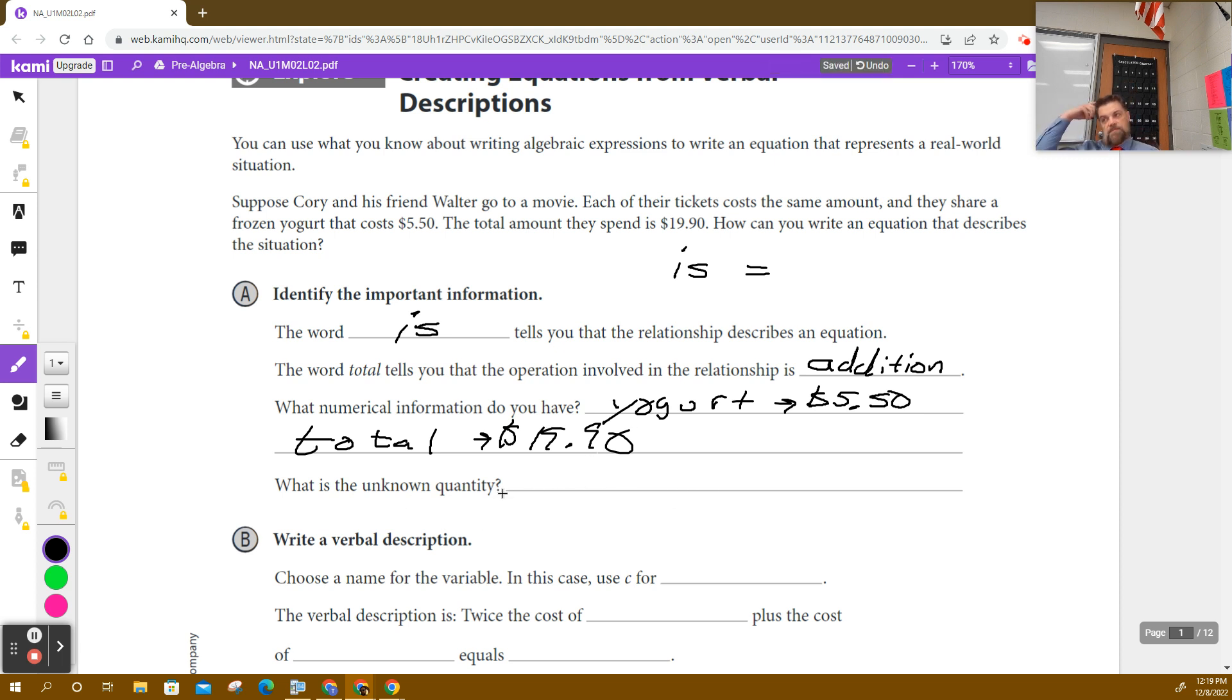I'm going to read this again, and you tell me what it is we don't know. Suppose Corey and his friend Walter go to a movie. Each of their tickets cost the same amount. They share a frozen yogurt, which is $5.50. The total amount they spent or spend is $19.90. Can you write an equation? What's the thing that we don't know? How much their tickets are? I don't know how much their tickets are. So the unknown quantity is the cost of the tickets.